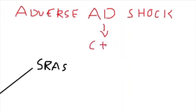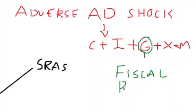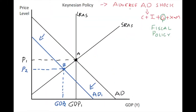Keynes would advocate that aggregate demand is made up of five things: C plus I plus G plus X minus M. Keynesian policy tends to advocate changes in government spending, which we term fiscal policy. Keynes would argue for the use of fiscal policy to manage the business cycle and return an economy to its potential output. Following an adverse aggregate demand side shock, Keynes would argue that fiscal policy should be what's called counter-cyclical.